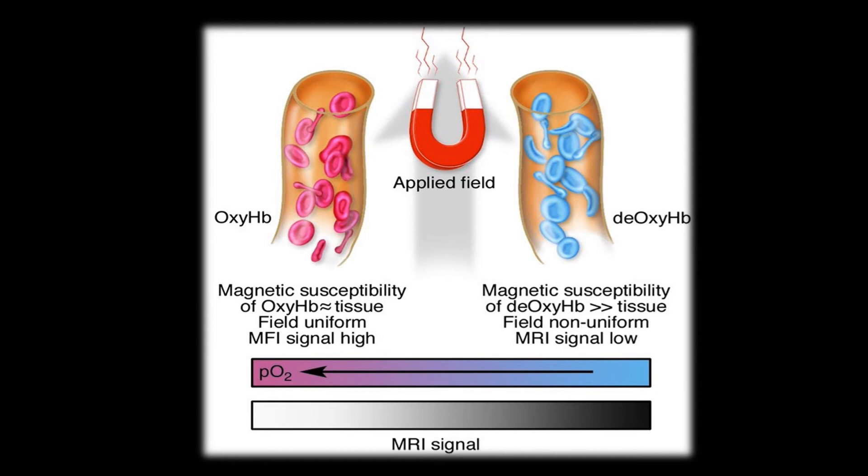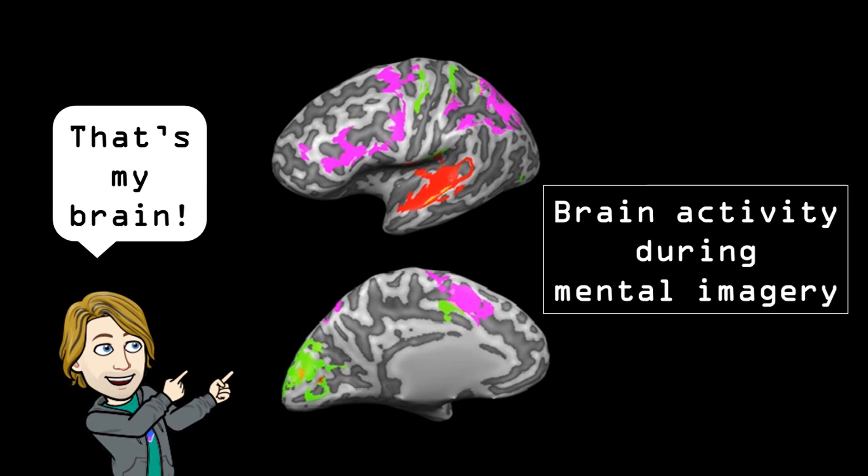Oxygenated regions will light up more brightly than the deoxygenated regions. The only thing that remains to do is to give these brighter spots a nice color. And voila, we got ourselves a vibrant picture of brain activity.